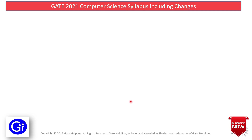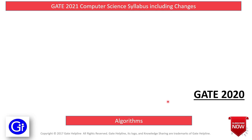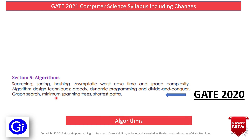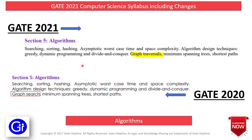The next subject is Algorithms. The GATE 2020 syllabus comprises Searching, Sorting, Hashing, Asymptotic Worst Case Time and Space Complexity, Algorithm Design Techniques — that is, Greedy, Dynamic Programming, and Divide and Conquer — Graph Search, Minimum Spanning Trees, and Shortest Paths. In GATE 2021, the only difference is that Graph Search is renamed to Graph Traversals.